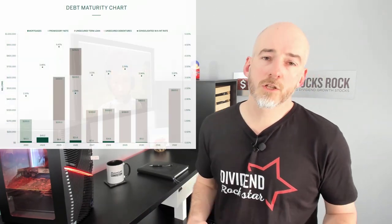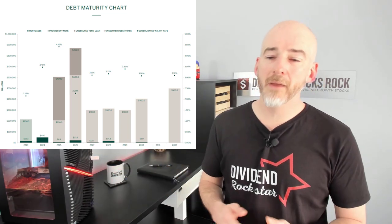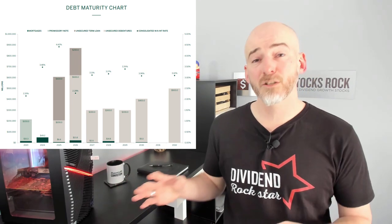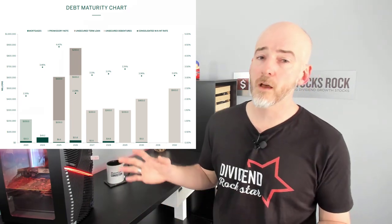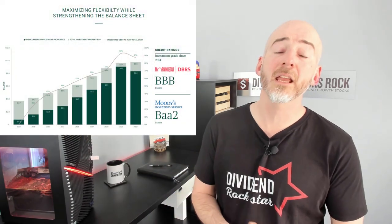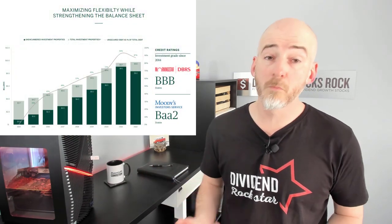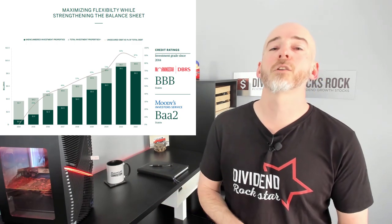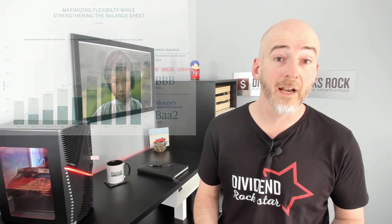When you look at Allied's debt maturity structure, it is well diversified throughout many years. We may have a big year in 2026, but chances are interest rates will have had time to slow down by then, so it's not a big worry. The company also shows a lot of room to remortgage some properties if they need to access cash quickly, and they benefit from a very strong credit rating.